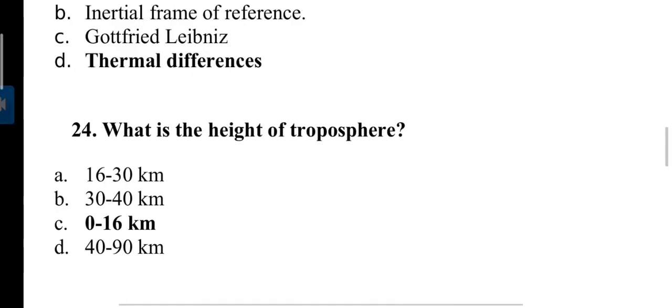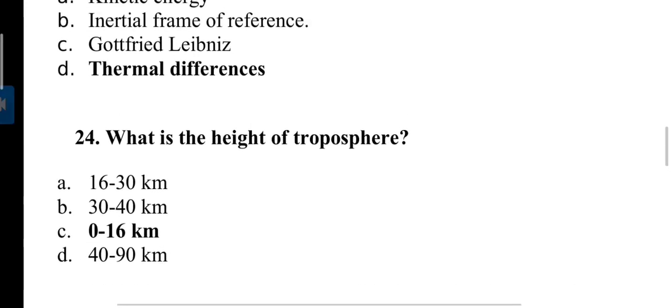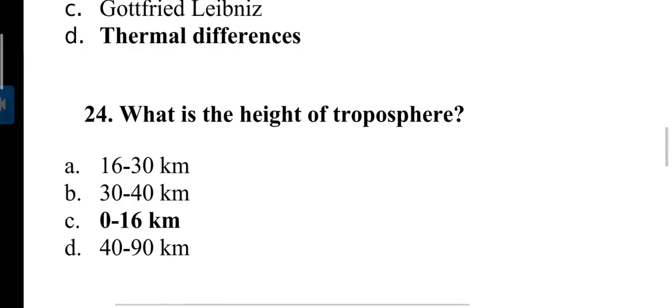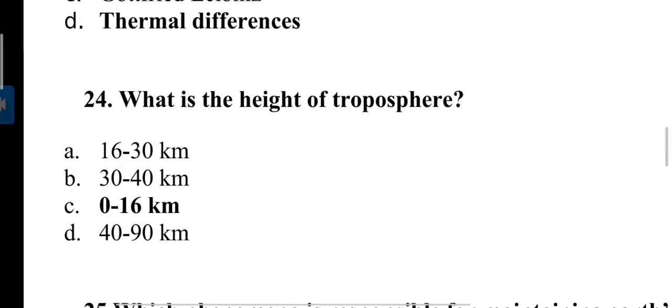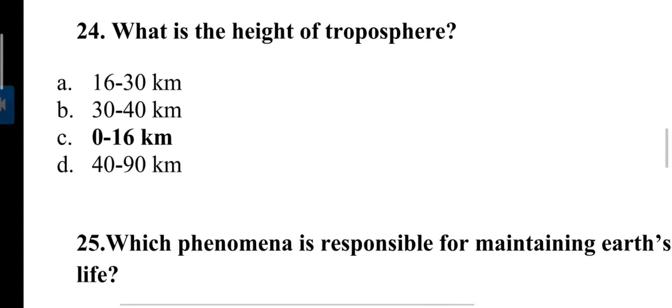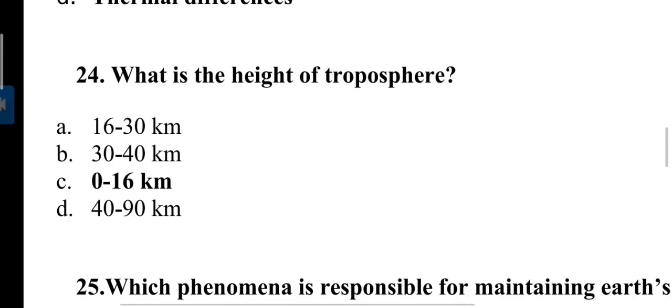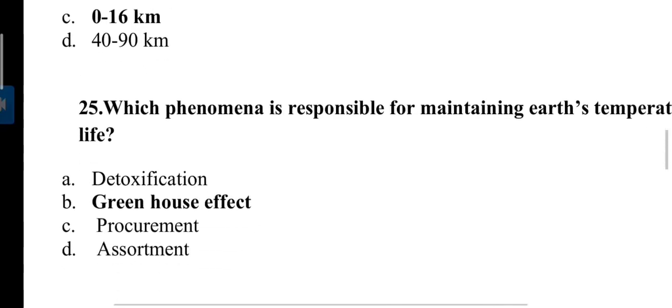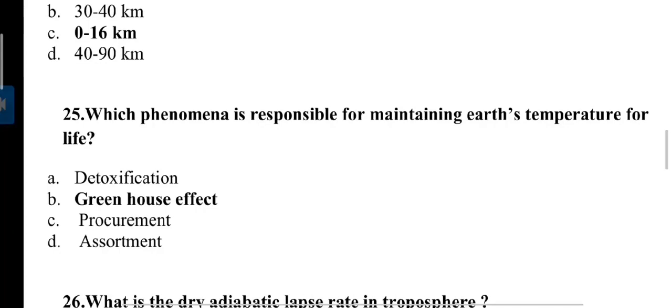Next question: What is the height of troposphere? It is a layer of atmosphere. Height is 0 to 16 kilometers. In troposphere all weather phenomena like mist, fog, precipitation, and rain occur. Next question: Which phenomenon is responsible for maintaining earth temperature for life? Answer is greenhouse effect. Responsible gases for greenhouse effect are carbon dioxide, methane, and nitrous oxide.